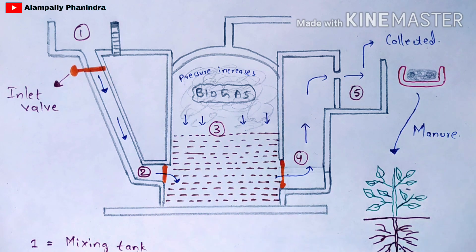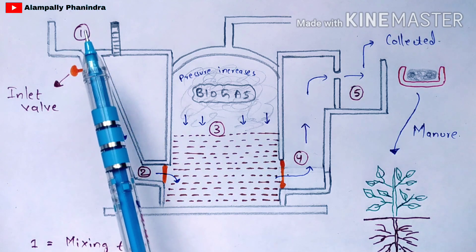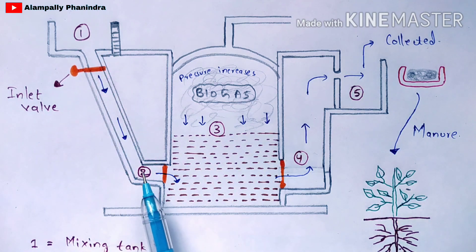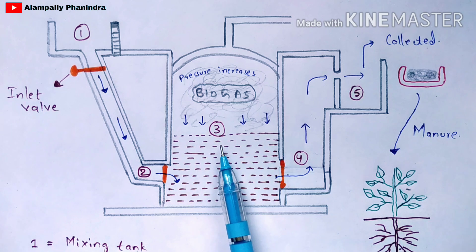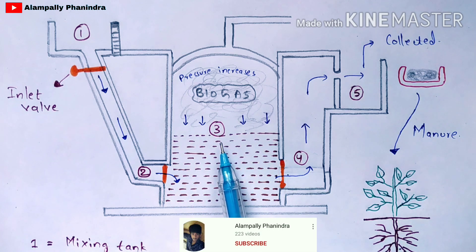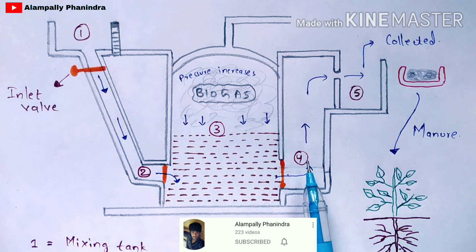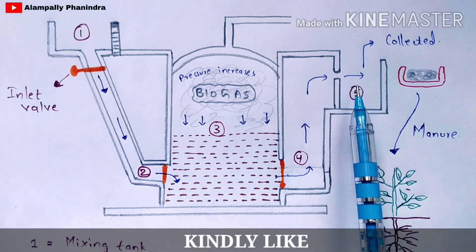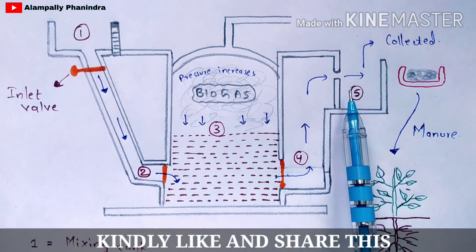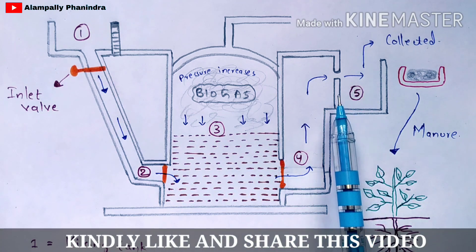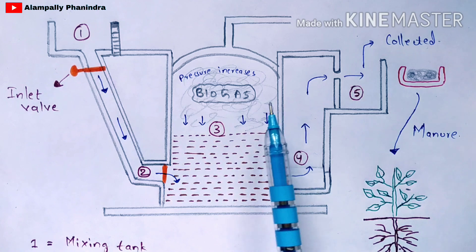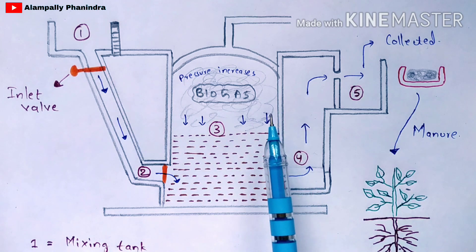This biogas plant includes five parts. The first part is the mixing tank, the second is the inlet chamber, the third is the digester tank, the fourth is the outlet chamber, and the fifth is the overflow tank.